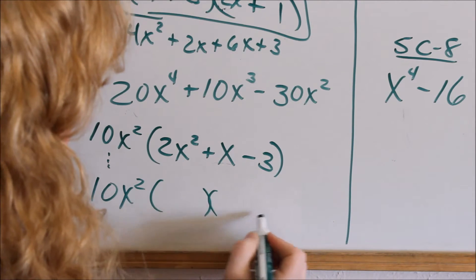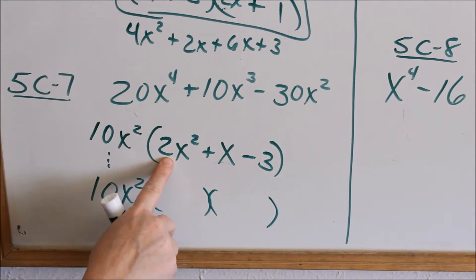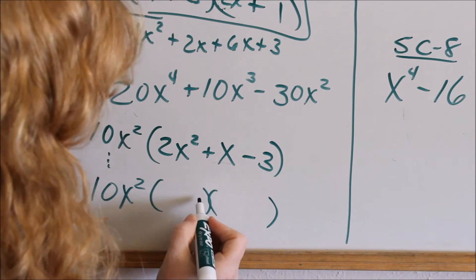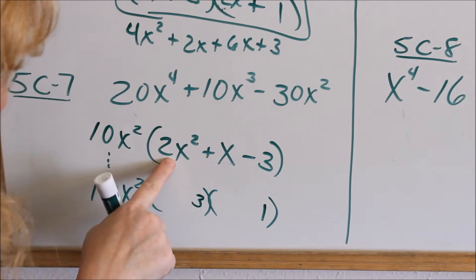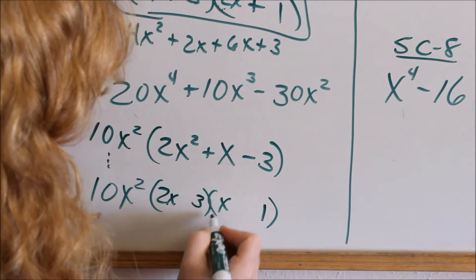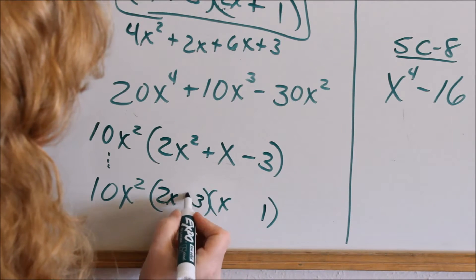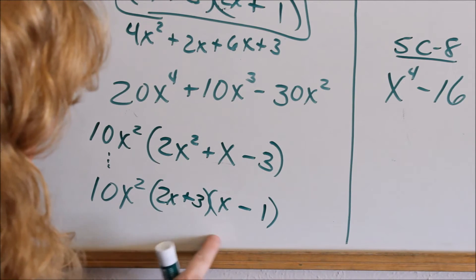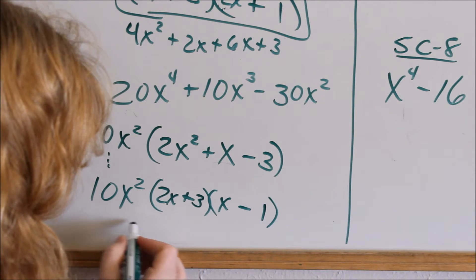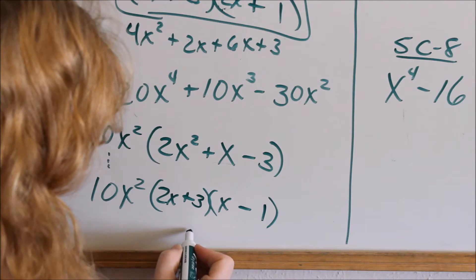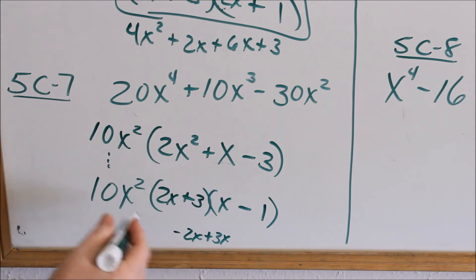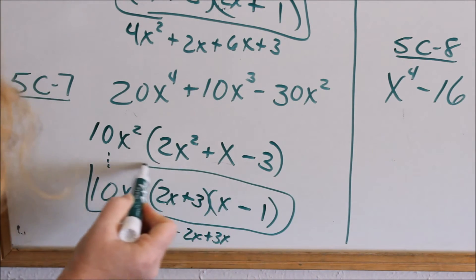Now I'm going to keep factoring. I can factor 2x squared plus x minus 3 into two parentheses. Do not forget to carry the 10x squared factor along — do not lose that. I have a coefficient out in front and I'm not in a positive world. This negative tells me I'm going to have a positive and a negative. I can only have a 3 and a 1 here, and factors of 2 are only 2 and 1. If I try 2x here and x here, I need a positive 1x middle term. Trying positive 3 and negative 2: that gives me a negative 2x plus 3x, which is a positive 1x. That's the correct factoring.